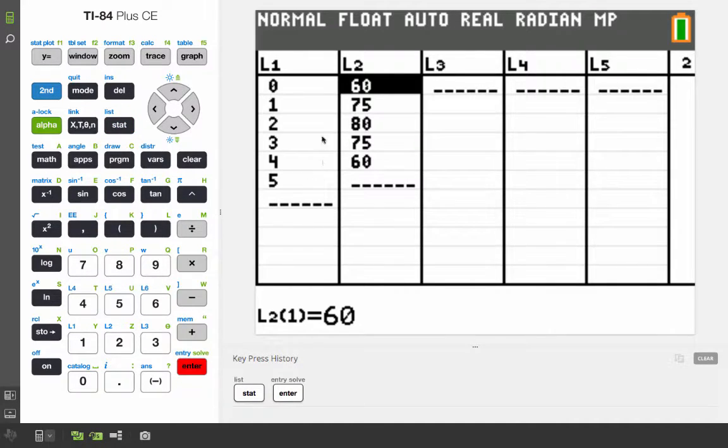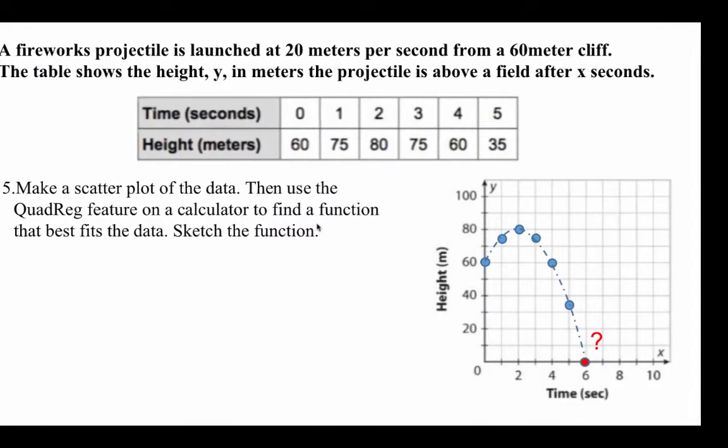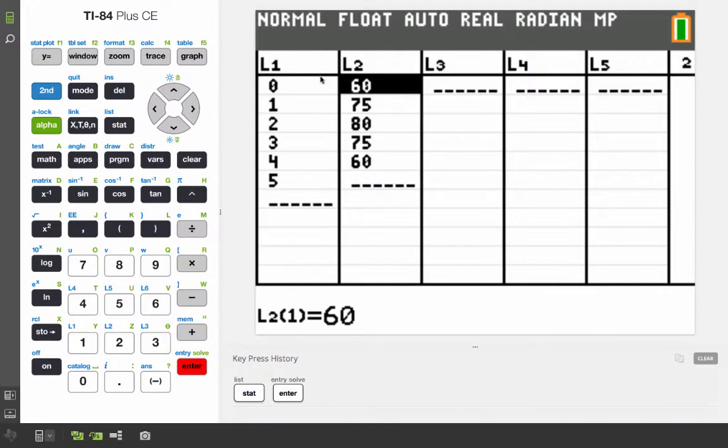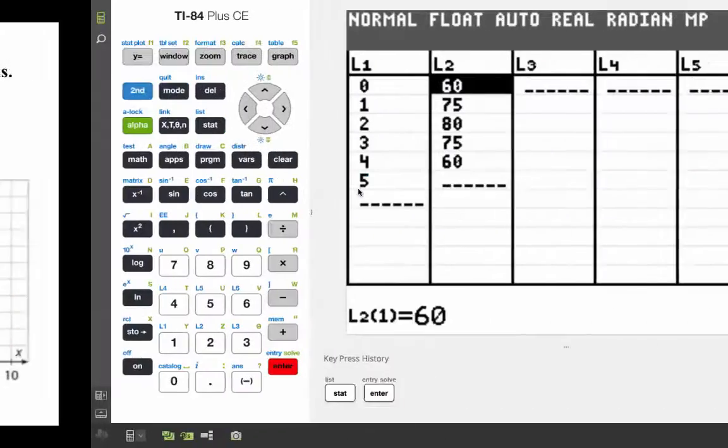I already entered the values for you. All the times, 0 through 5, that's the x value, so I put them in list 1. And L2 is the height. The only thing I did not enter is the last one. I believe that's 35. Yes, it is.